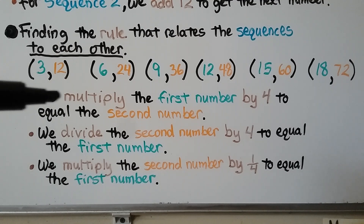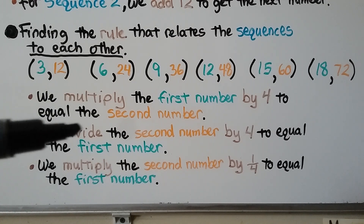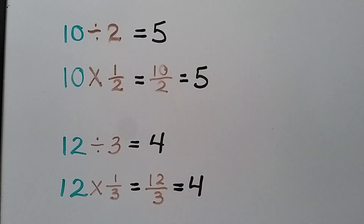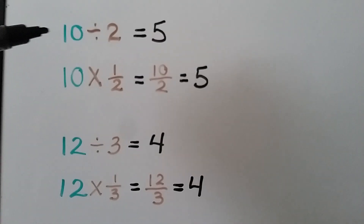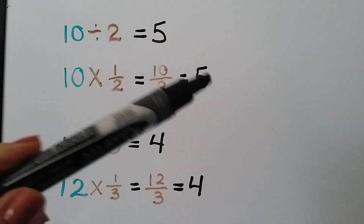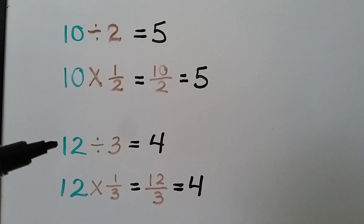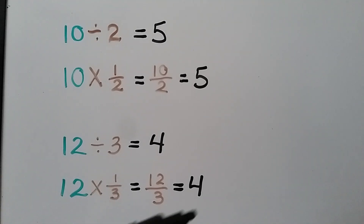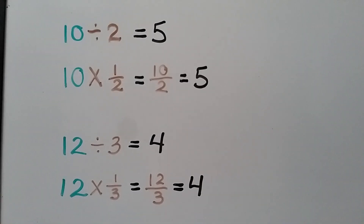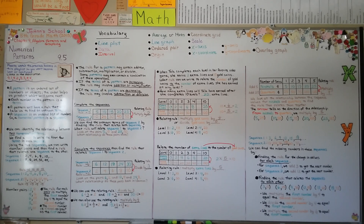We could also multiply the second number by 1 fourth to equal the first number. Notice that multiplying the first number by 4 gives the second, while dividing the second by 4 or multiplying by 1 fourth gives the first. Make sure to pay attention to the direction the arrow is going. Remember: 10 divided by 2 equals 5, and 10 times 1 half also equals 5. Likewise, 12 divided by 3 equals 4, and 12 times 1 third equals 4. We can divide by a whole number or multiply by its equivalent fraction.